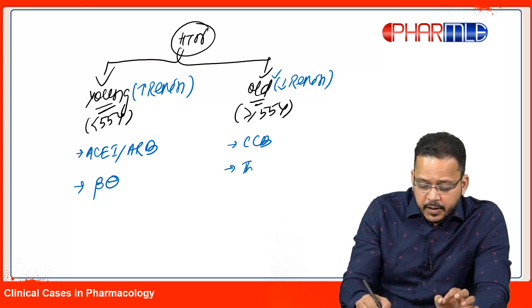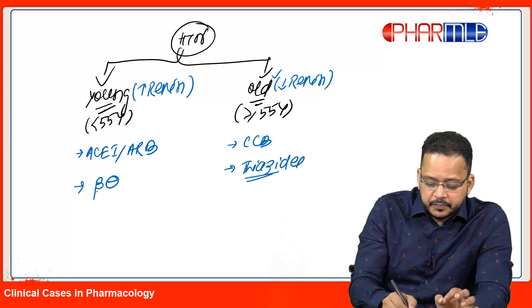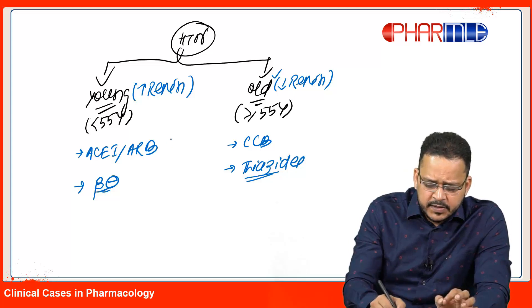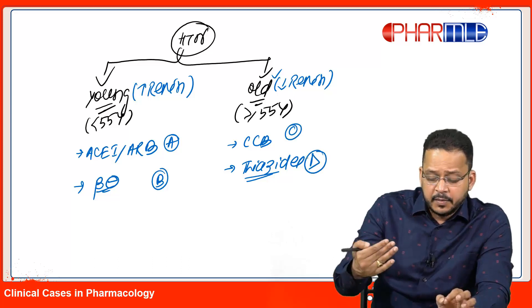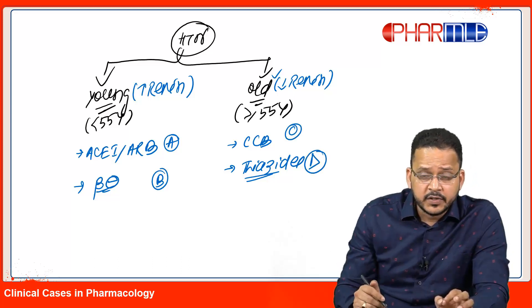Whereas other drugs, the two first-line drugs like calcium channel blockers and diuretics like thiazides, are preferred in old age. So it is easier to remember alphabetically like A B C D - A B (ACE/ARB, beta blockers) are used in young age, C D (CCB, diuretics) are used in old age.